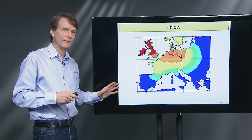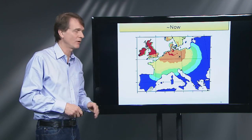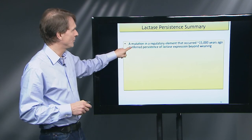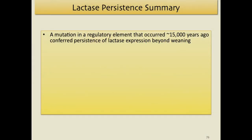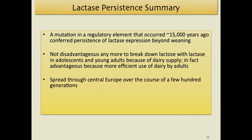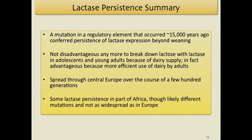Summary: a mutation in a regulatory element about 15,000 years ago conferred persistence of lactase expression beyond weaning. With dairy farming, it was no longer disadvantageous — in fact it became advantageous, making more efficient use of dairy products by adults. It spread through central Europe over a few hundred generations, with an estimated selection coefficient of about 1% — one more child out of 100 per generation. In Africa, where dairy farming independently evolved, different alleles arose that also provide lactase persistence, though they are likely different mutations.